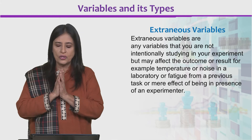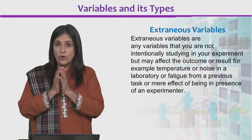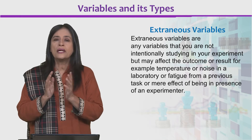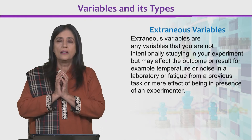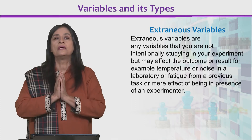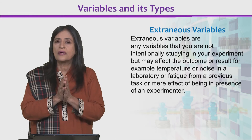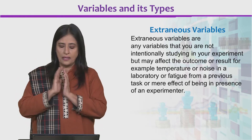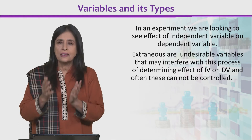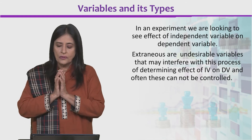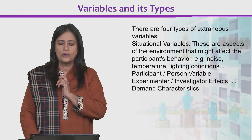Another term we use is 'extraneous' — like external, extraneous means extra or irrelevant. These are any variables that we are not studying intentionally in our experiment, but they can have an effect. For example, noise or temperature in the room where you are conducting the experiment, fatigue from previous work, or even the presence of the experimenter can affect the actual results. These are variables we are not studying, but they will actually affect your results. In every experiment, we want to see the effect of the independent variable on the dependent variable, but these undesirable variables interfere with that effect, and often they cannot be controlled.